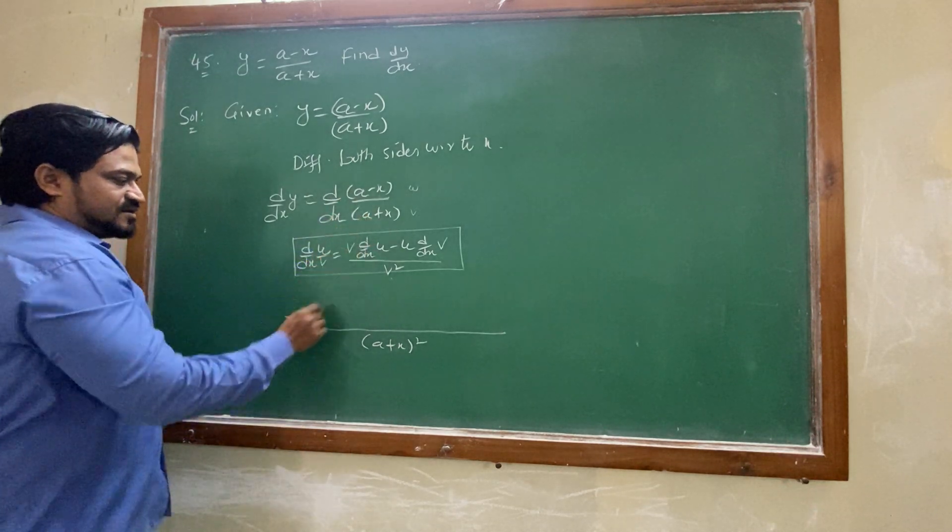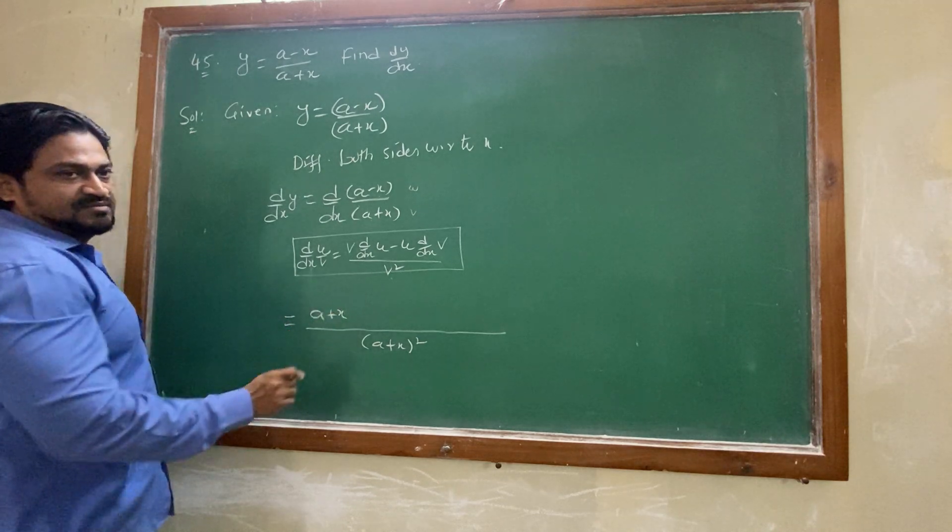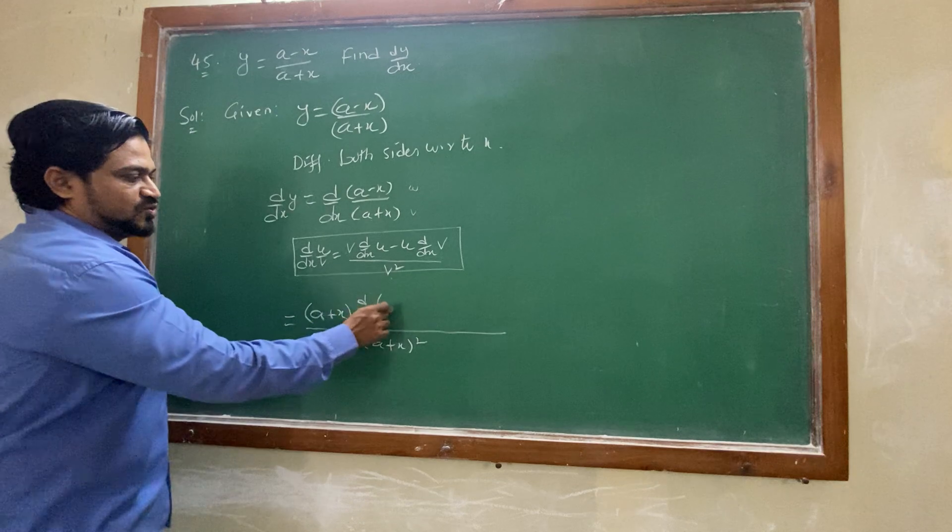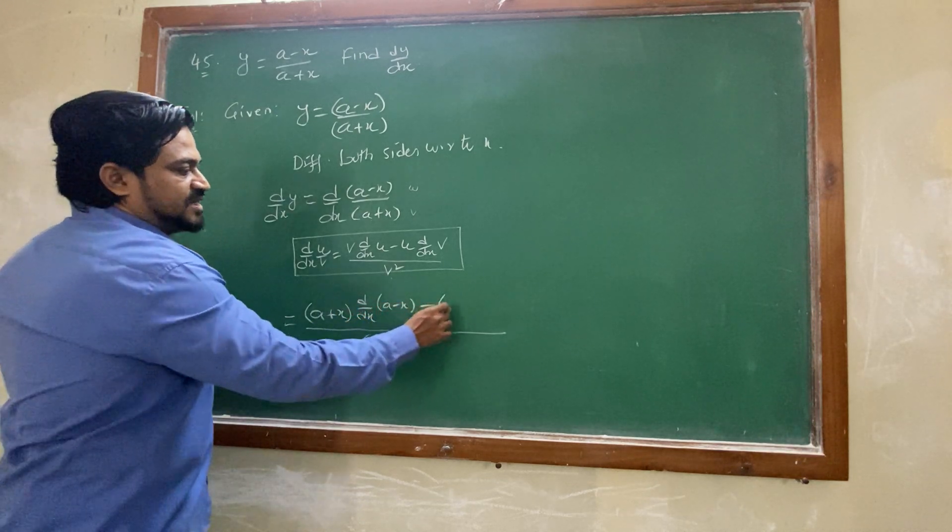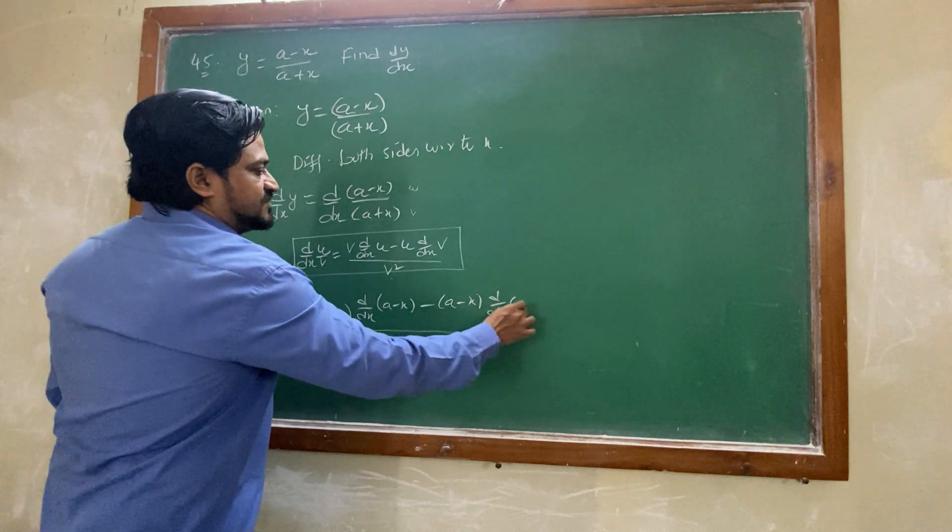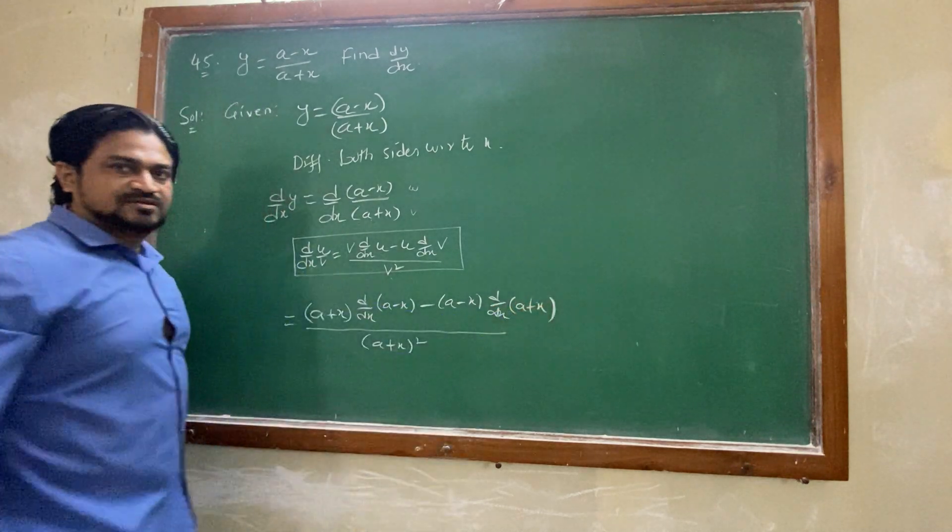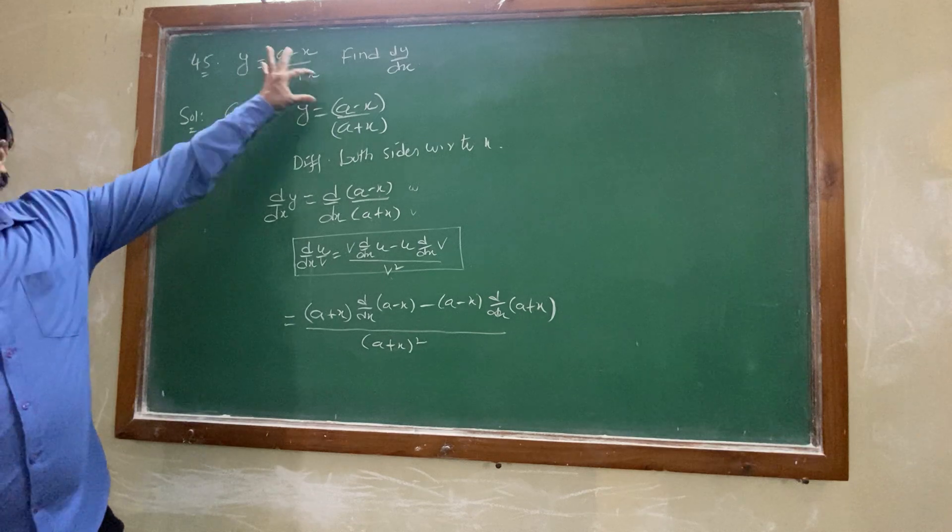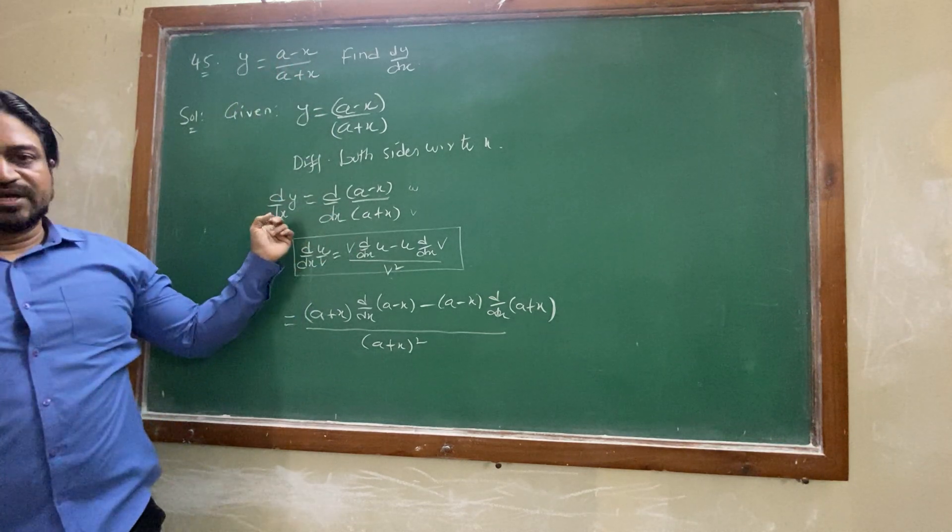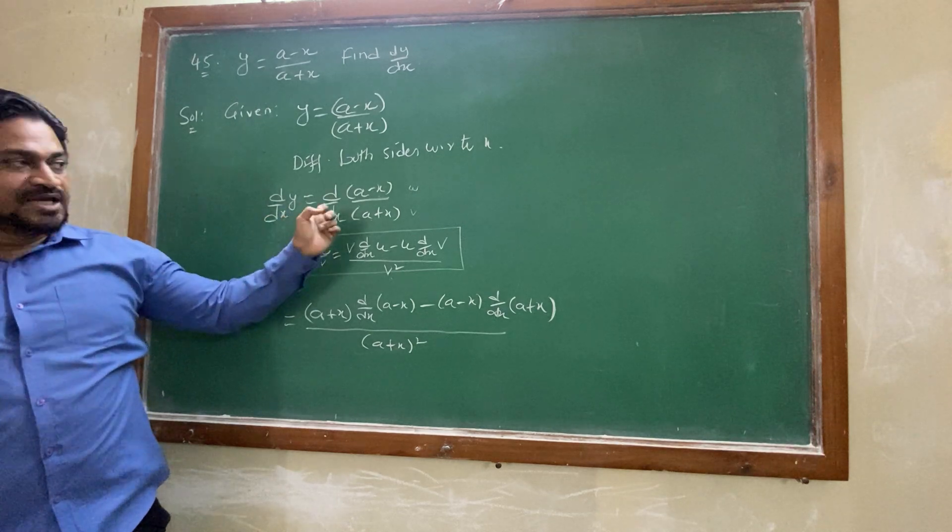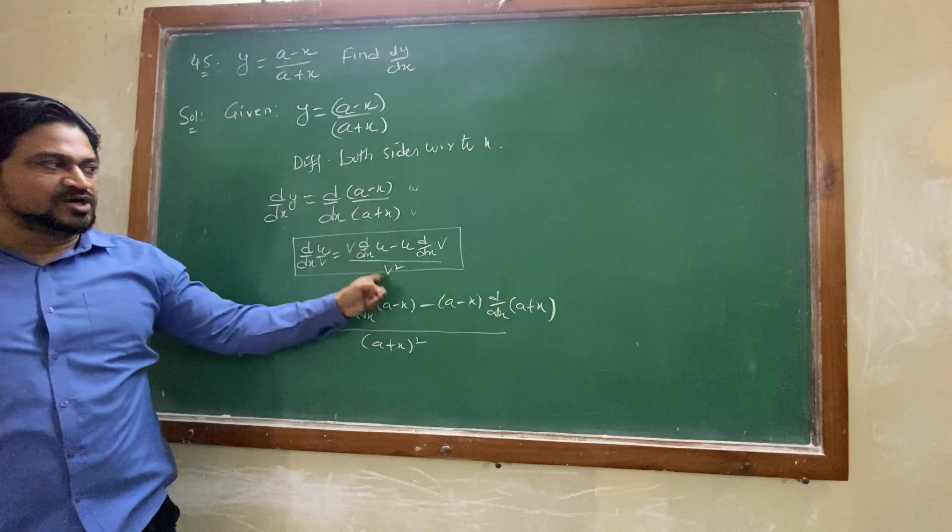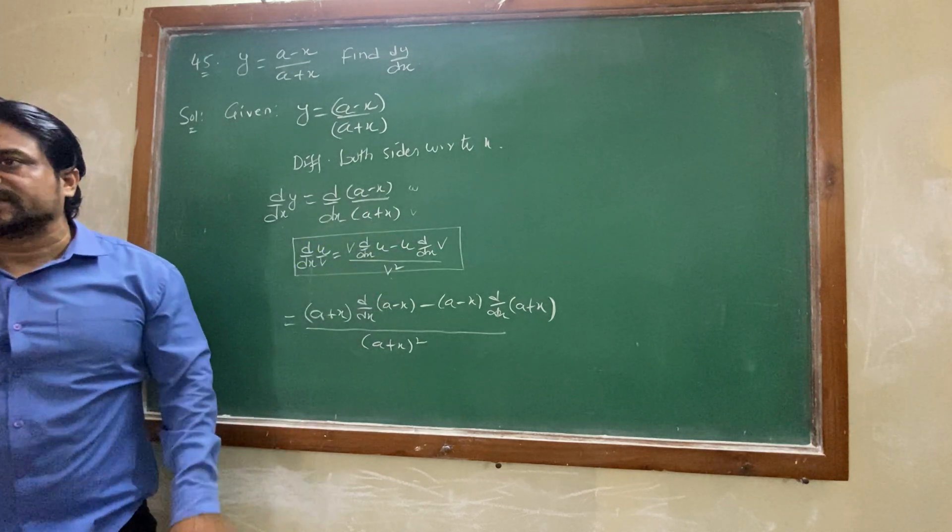Now dy by dx of these two things, first is taken as u, second is taken as v, whole divided by v square. You need to consider brackets whenever we are writing that v value or u value. Now v is there. You should take brackets, then write dy by dx of u minus u, dy by dx of v. Whenever any question is given, take brackets to that one, then differentiating both sides with respect to x.